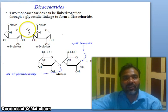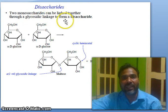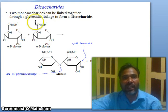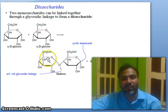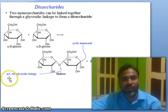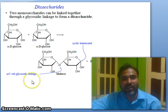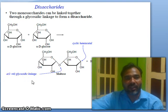Disaccharides: two monosaccharides can be linked together through a glycosidic linkage to form a disaccharide. For example, alpha-D-glucose and alpha-D-glucose are linked at position 1 and position 4 through an alpha glycosidic linkage to form maltose.